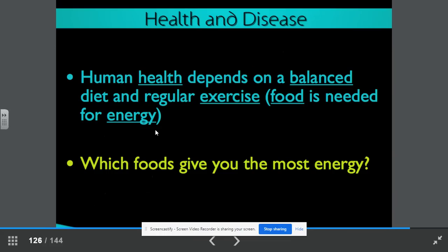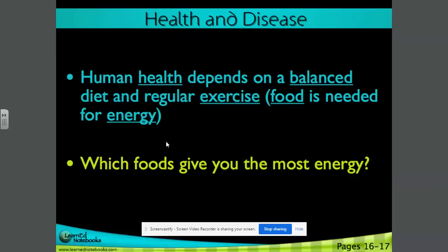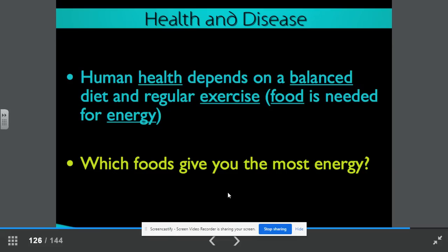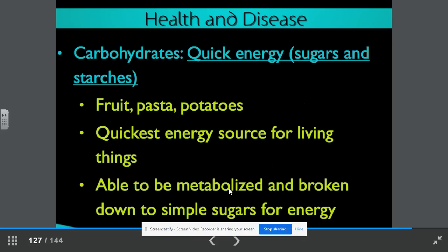Human health depends on a balanced diet and regular exercise. Food, we know, is needed for energy. Which types of food give you the most energy? If you're an athlete, you know that you eat certain types of foods before certain events. They will give you quick energy or more sustained energy, depending on your sport. Carbohydrates, these are quick energy providers, such as sugars and starches. It is found in fruit, pasta, potatoes. This gives us the quickest energy source for living things. It is able to be metabolized and broken down to simple sugars for energy.